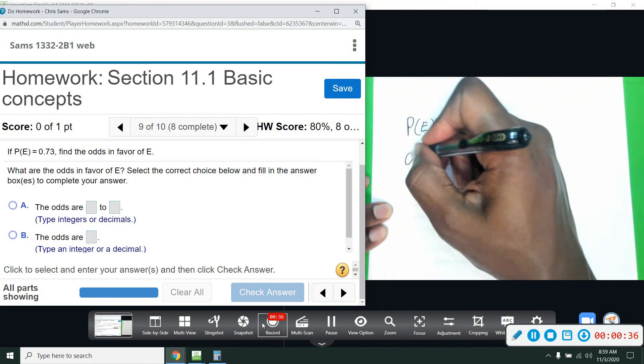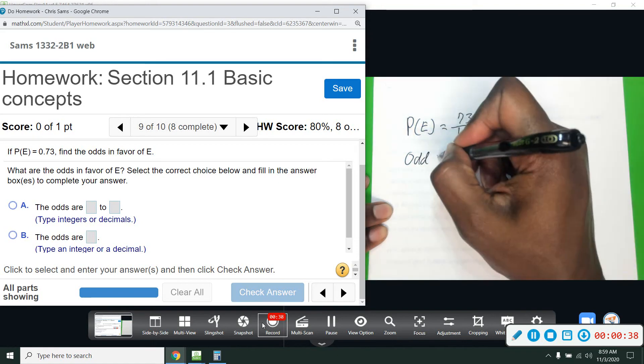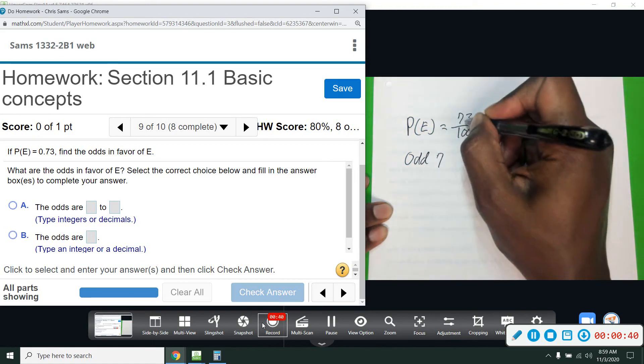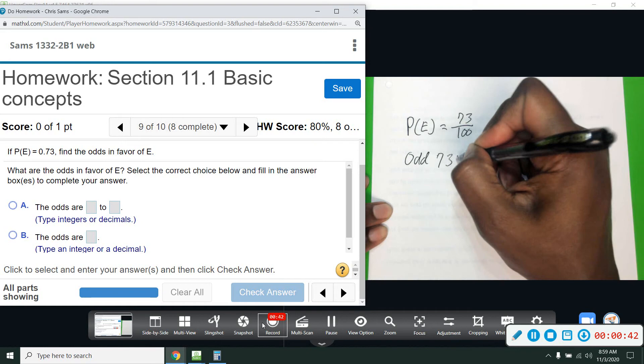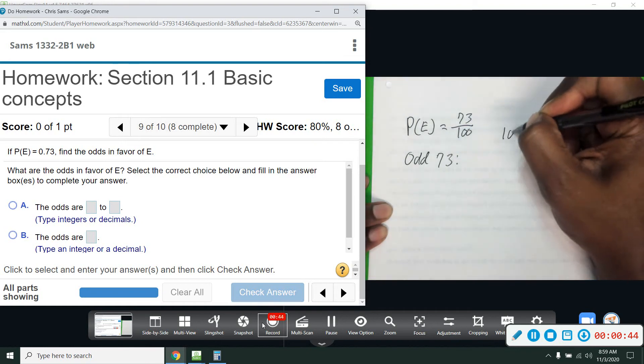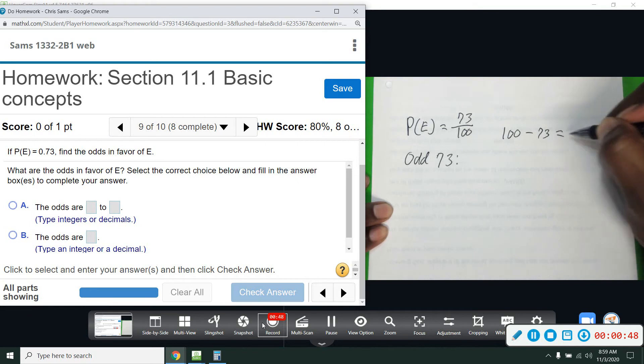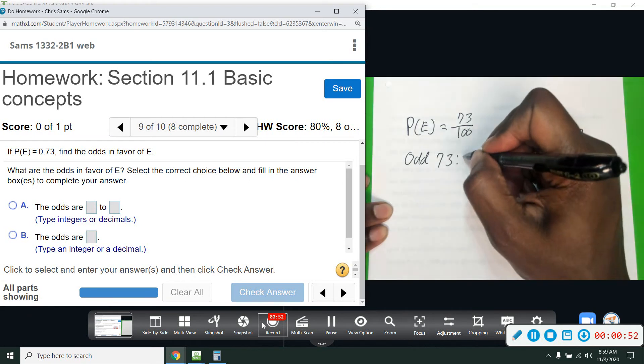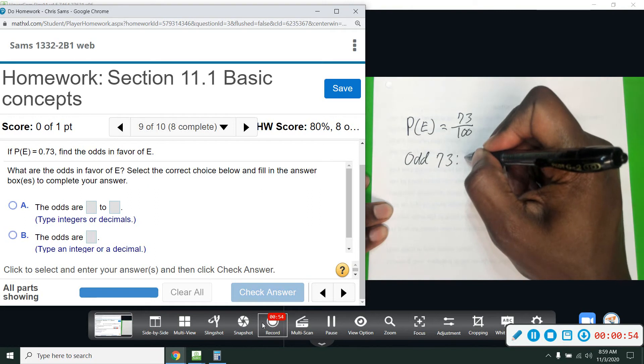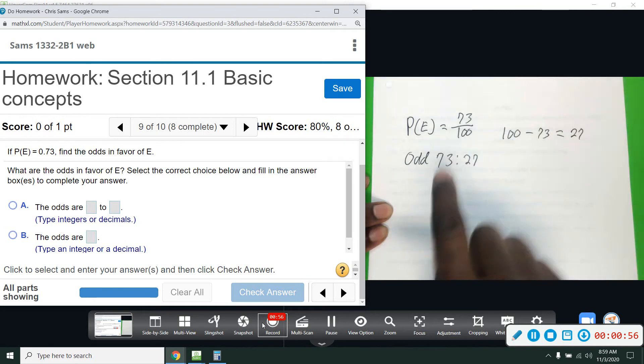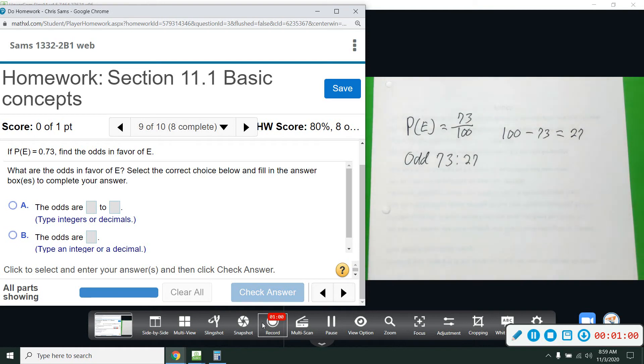The odds separate these into two groups. So odds would take the top. So odds of E would be 73. And then you would do that 100, the total, minus and take out the 73 to find out what's in the other group or what's remaining, and that will leave us with 27. So the odds would be 73 to 27.